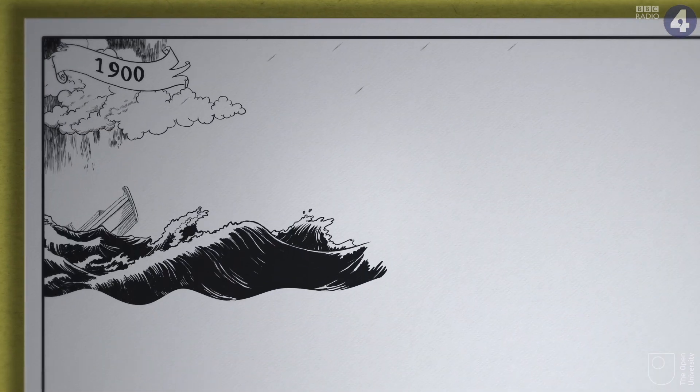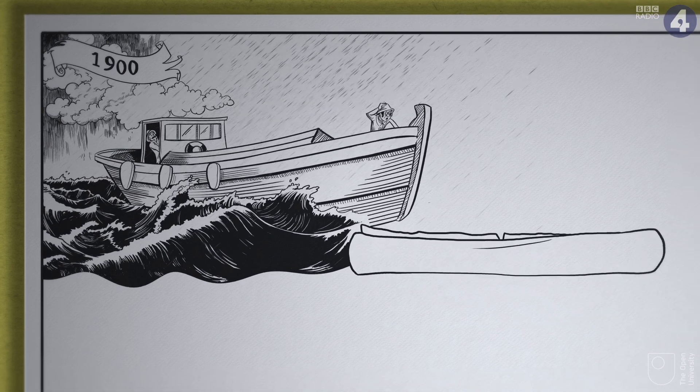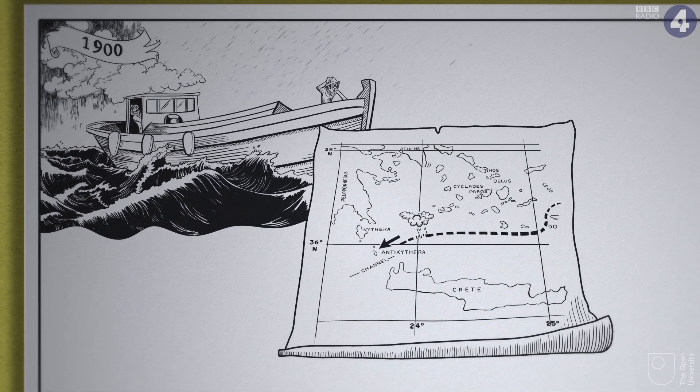In 1900, some sponge fishermen were blown off course in a storm and took shelter on Antikythera, a small island near Crete.